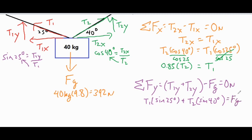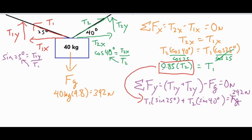Adding Fg to both sides: T1 × sin(25°) + T2 × sin(40°) = 392 newtons. Now we substitute 0.85T2 in for T1: that gives 0.85 × sin(25°) × T2, which works out to a coefficient of 0.36. So we have 0.36·T2 + T2 × sin(40°). Since sin(40°) ≈ 0.64, adding the coefficients gives 1.00 × T2.